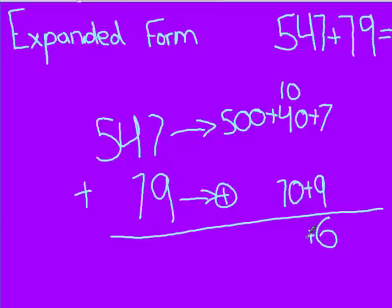Then you add the 10, the 40, and the 70, and that is 120. You put the 20 under the 70, and the 100 above the 500.